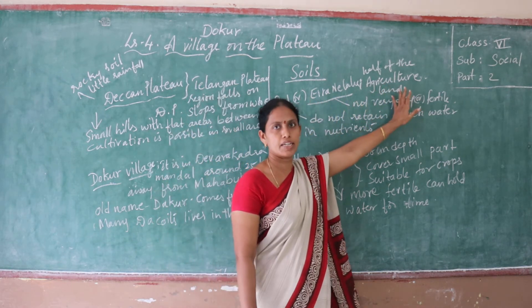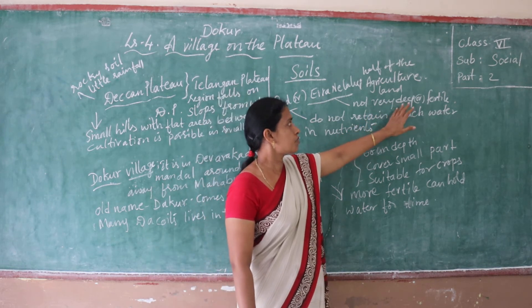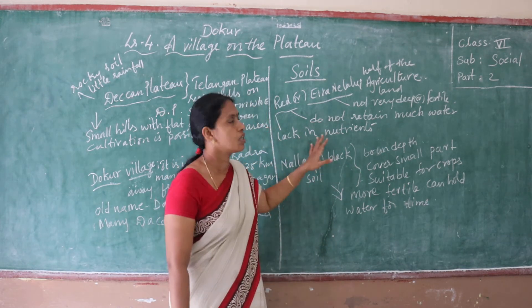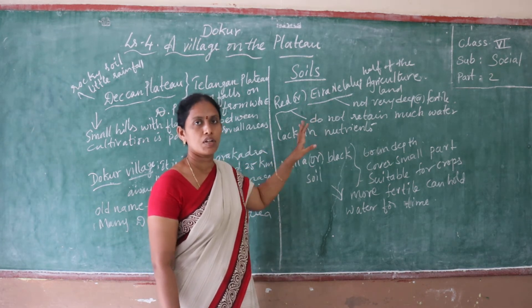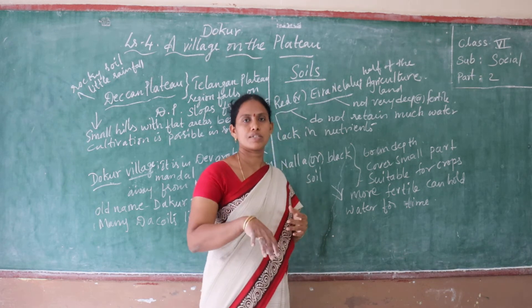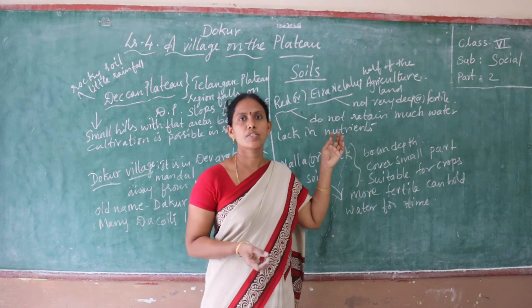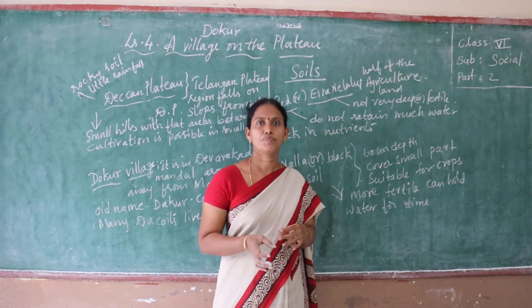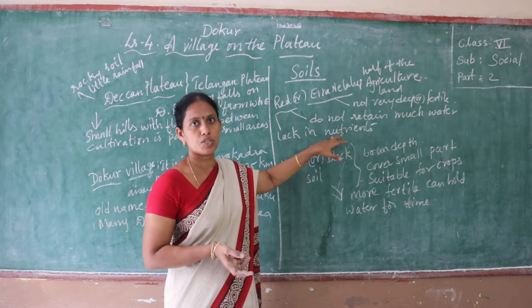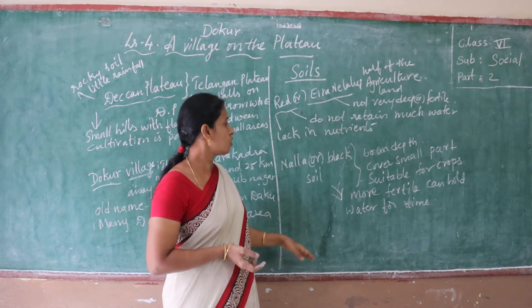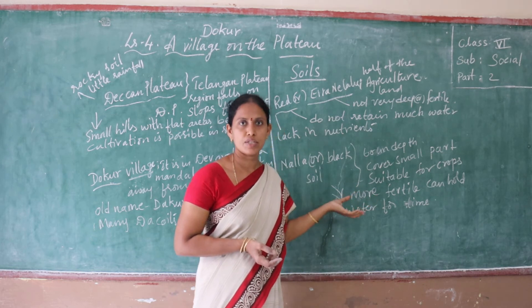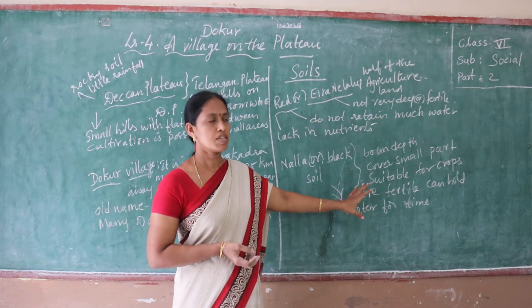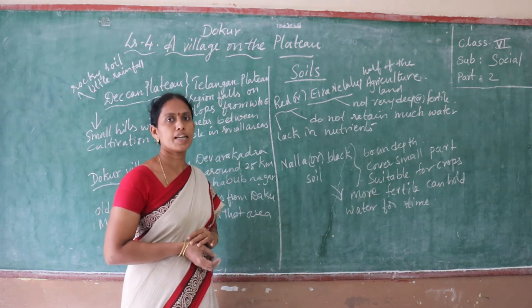Half of the agricultural land is red soil. The red soil is not fertile, not very deep, does not retain much water, and lacks nutrients. Plants need nutrients which are dissolved in the soil — they take those nutrients to grow. If nutrients are not available in the soil, crops do not grow well in that area. A very small part of the area is black soil. Of course, black soil is suitable for crops and we can cultivate here because of the fertile land and water retention.